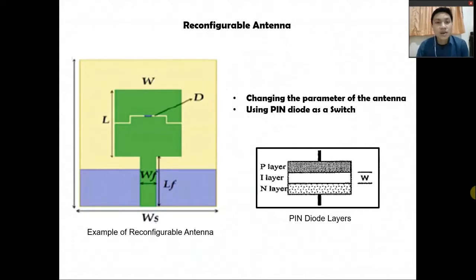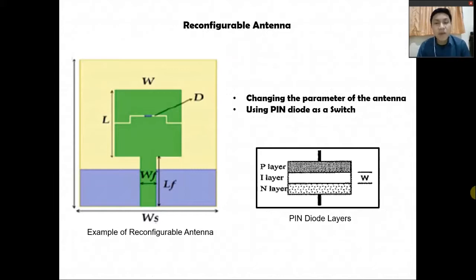I'm going to design the antenna at two different frequencies: first is 3.5 GHz and then 4.8 GHz. To achieve this, I'm going to use a reconfigurable antenna. By using a switch, I'm going to change the parameter of the antenna. In antenna theory, by changing the parameter of the antenna, we can actually achieve different frequencies. In this case, for my antenna, I'm going to change the total size of the patch so it will work at two different frequencies.